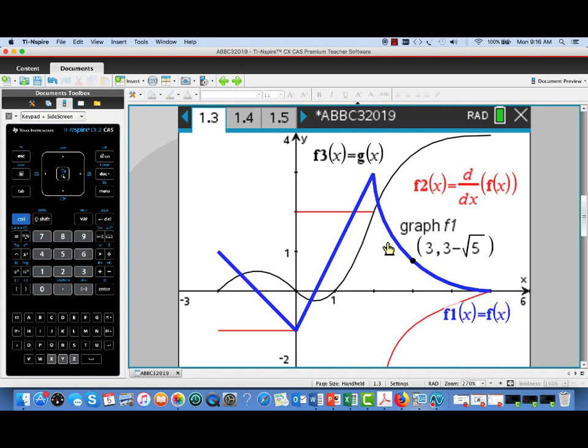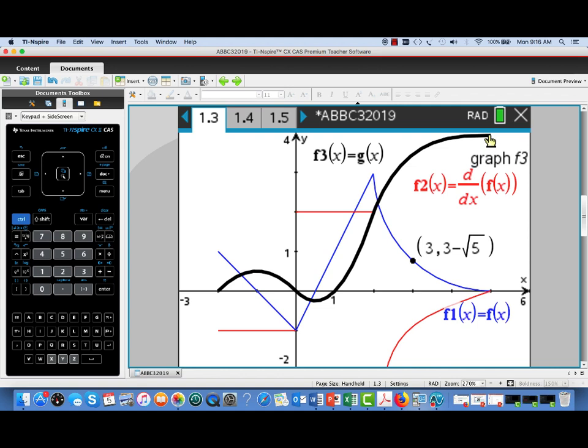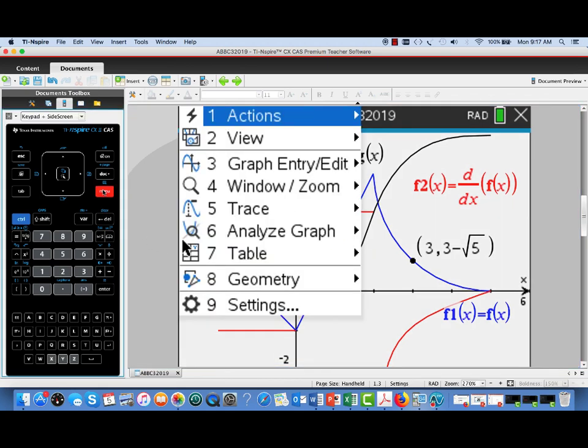Okay, one of the questions asked was, what's the absolute maximum value of g on this interval from minus 2 to 5? We can see on the graph here that's occurring at that rightmost endpoint. So I'm going to turn the trace back on.